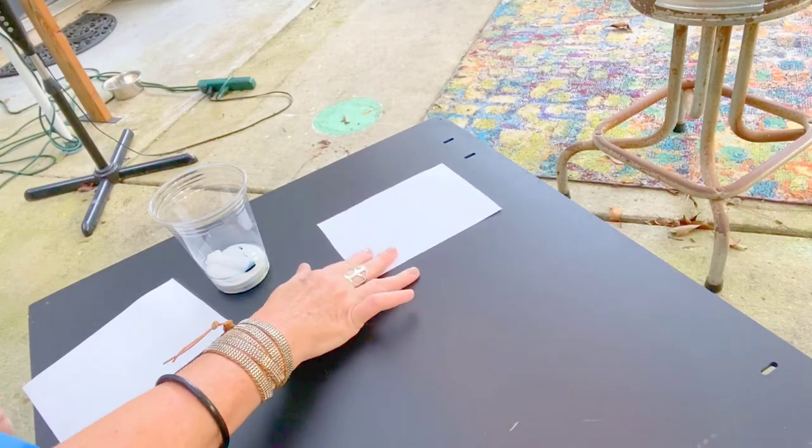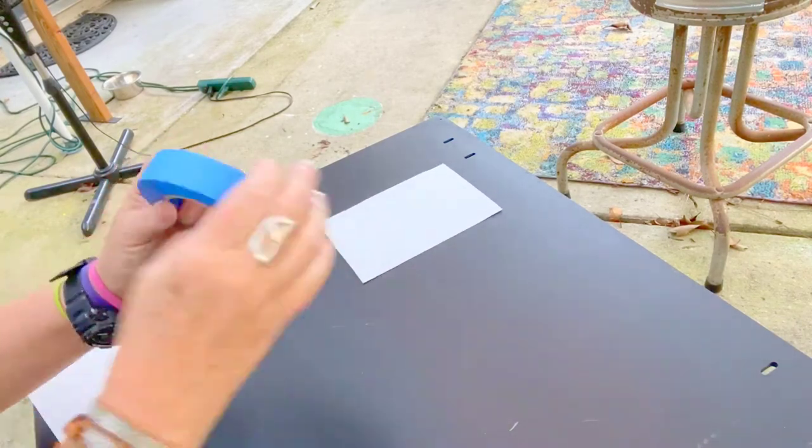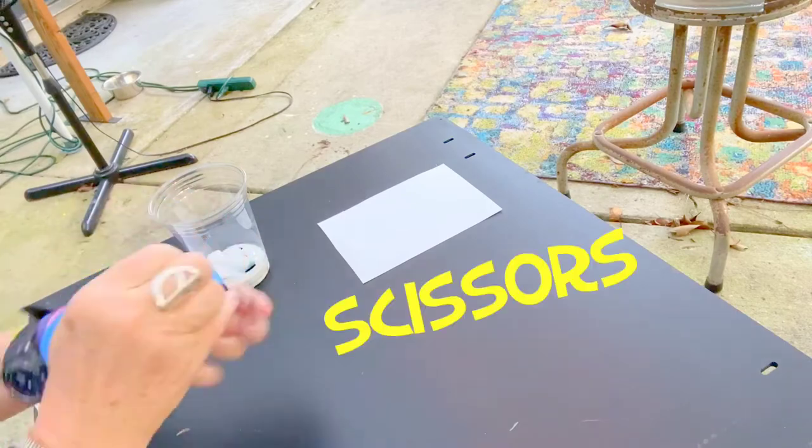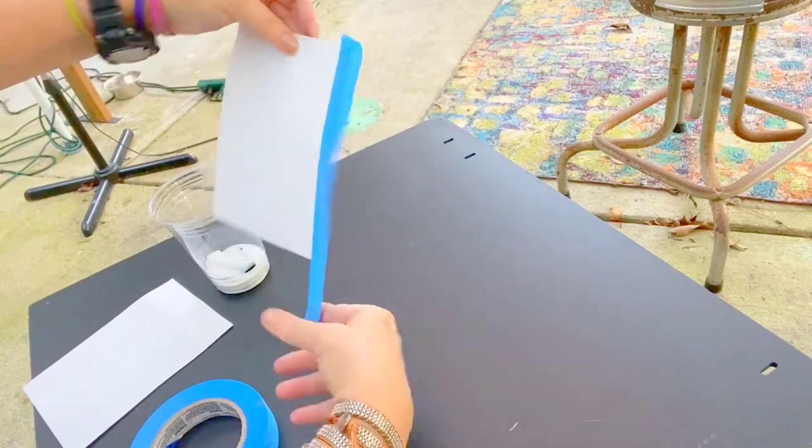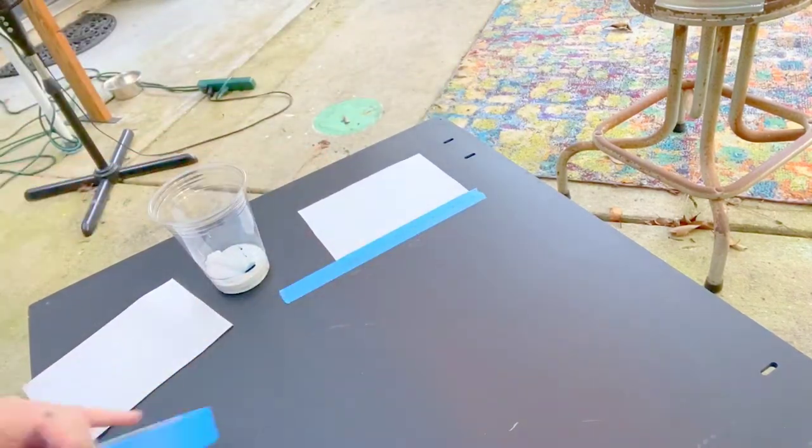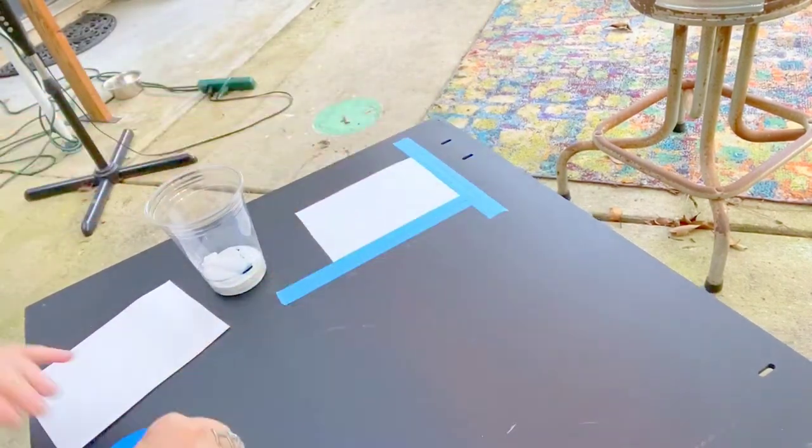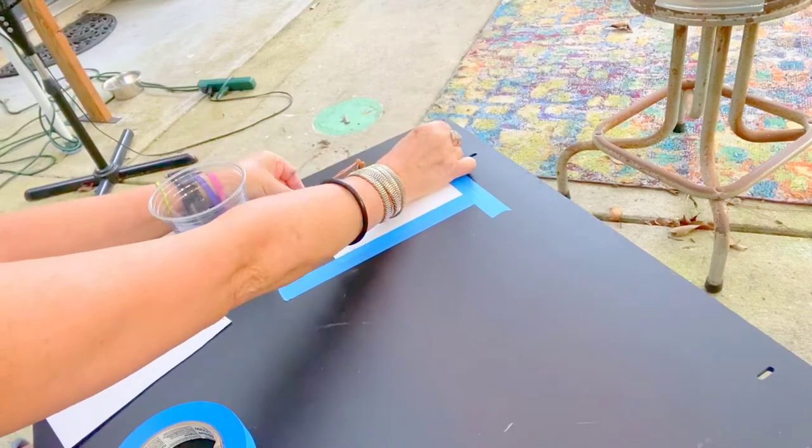Buy yourself some masking tape or blue painter's tape and you'll use that to not only create a border around your painting, but it will give you a surface on which to work.